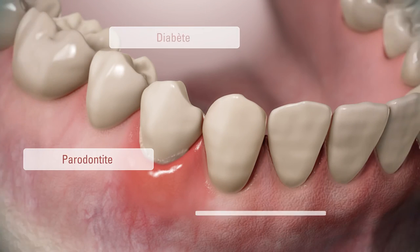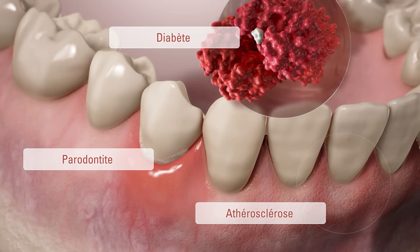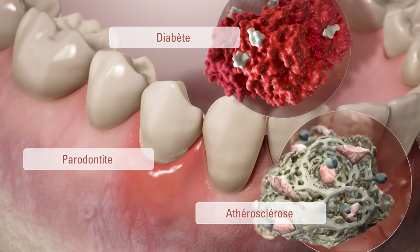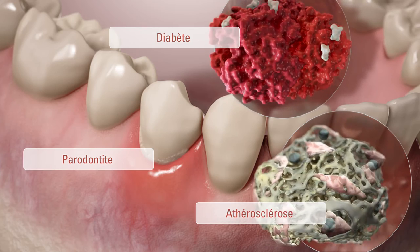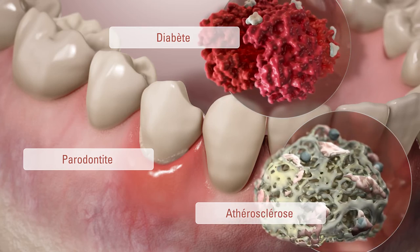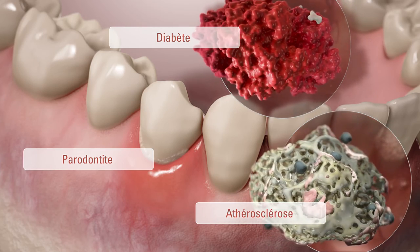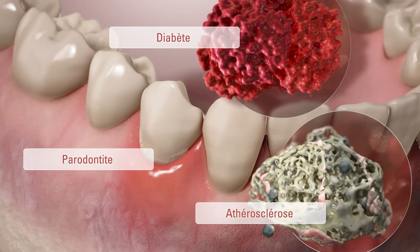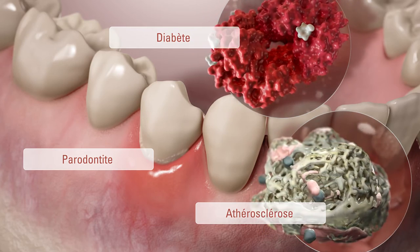Des recherches ont montré que la parodontite est un facteur de risque des maladies cardiovasculaires, tout comme le tabagisme, l'hypertension et un taux élevé de lipides ou de cholestérol dans le sang. S'il existe un diabète, les deux maladies peuvent s'amplifier mutuellement.